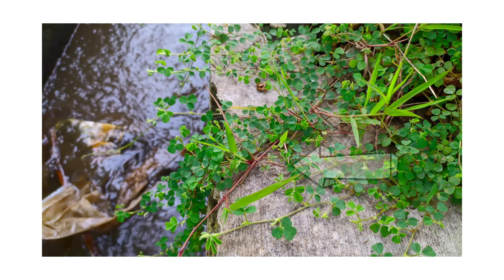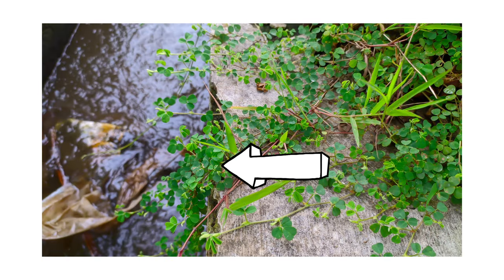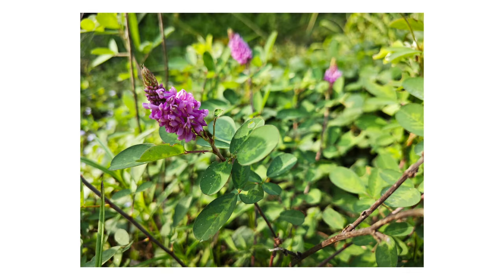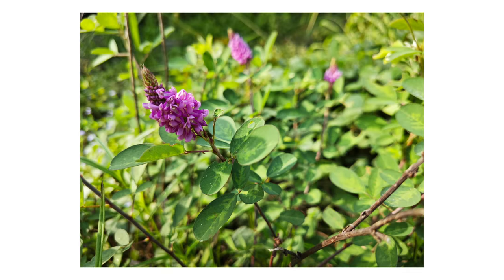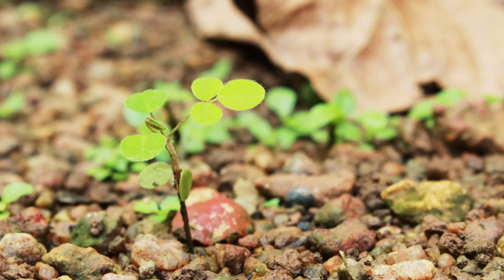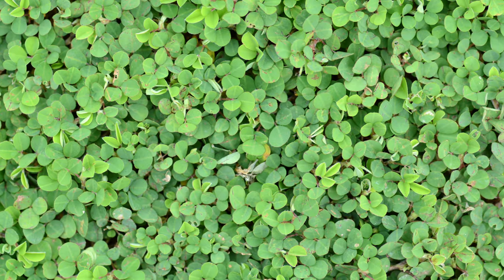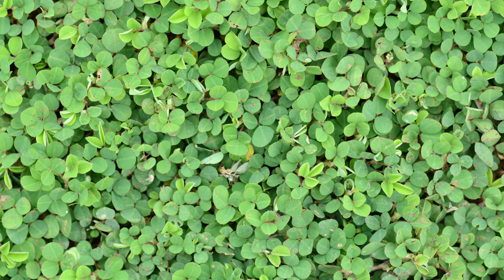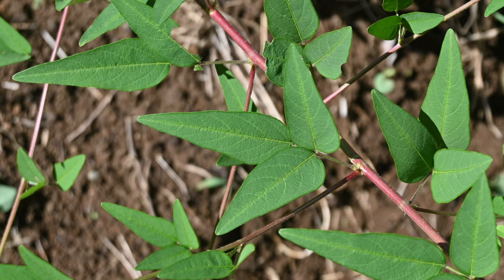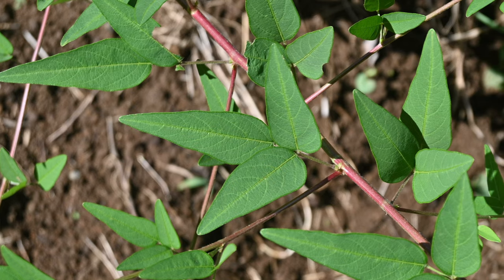Many beggar weeds grow prostrate, or along the ground, up to eight inches from the base, but some species can also grow upright up to six feet in height. The leaves grow in a trifoliate shape, meaning each leaf is divided into three leaflets. Depending on the species, the leaflets range from short and heart-shaped to up to four inches in height and ovular or lance-shaped.